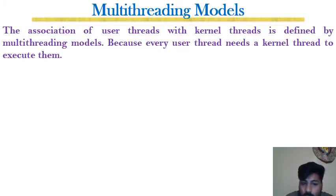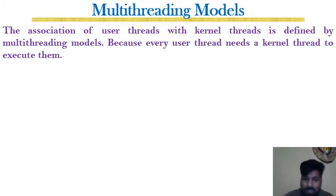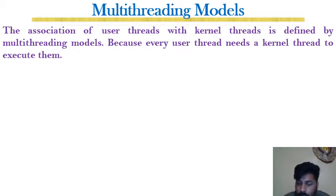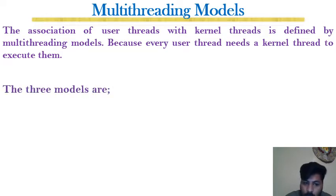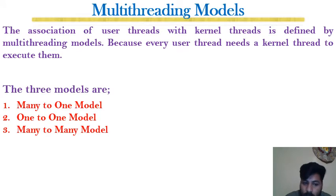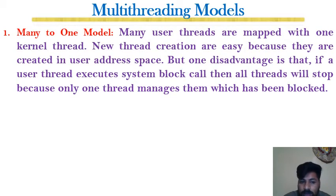The association of user threads with kernel threads is defined by multi-threading models, because every user thread needs a kernel thread to execute it. There must be a mapping function that maps user threads to kernel threads. We have three models: many-to-one, one-to-one, and many-to-many. There is no one-to-many model.